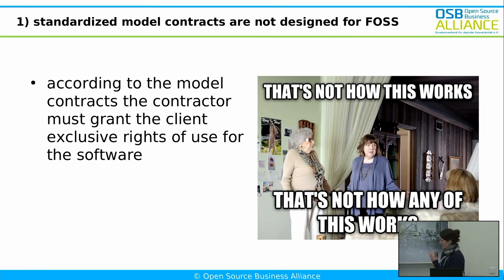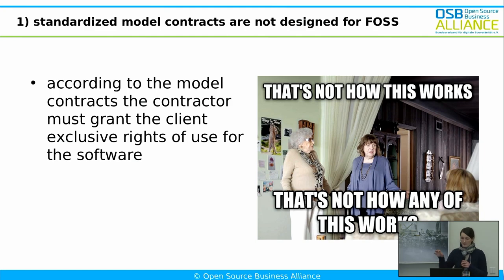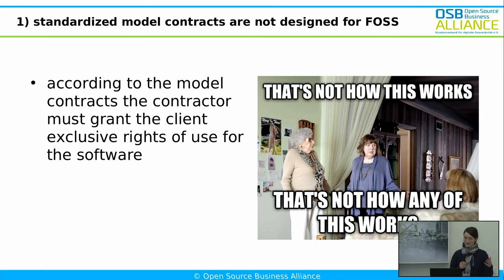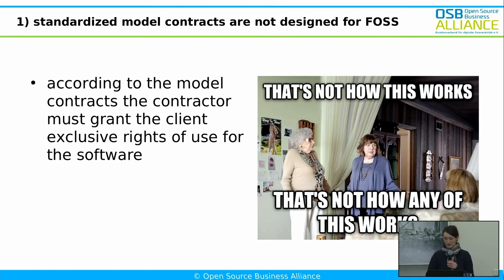This is one of the main issues with these standardized model contracts. Nevertheless, the German federal government, different counties, cities, municipalities and different branches of the administration do regularly procure open source software on a daily basis, and sometimes even on a large scale. So this is a big problem, but there are a lot of workarounds that people have found. Sometimes when the administration is procuring open source software, there are no problems at all. And sometimes there are a lot of issues. A year ago, I conducted a survey among our members who regularly sell open source software and corresponding services to the administration, and I wanted to find out what their experience is with these model contracts and where the problems lie.